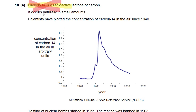It occurs naturally in small amounts as carbon-14. It's a radioactive isotope of carbon. Scientists have plotted the concentration of carbon-14 in the air since 1940. You can see there's no data in 1920 to 1940. Something happens here, and suddenly carbon-14 in the air goes up much higher. And something else must happen here — carbon-14 begins to gradually decrease.